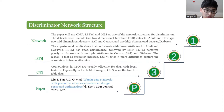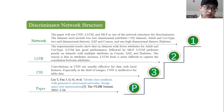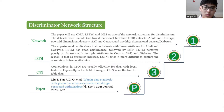This paper conducts many experiments. The paper uses LSTM and MLP as network structures for the discriminator. The dataset includes two low-dimensional datasets and high-dimensional datasets. The experimental results show that on datasets with fewer attributes, LSTM has good performance followed by MLP.